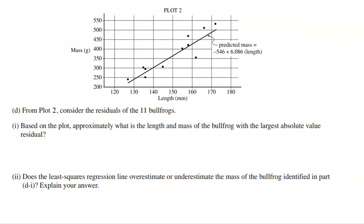One more part that has two parts to it. From plot two, consider the residuals of the 11 bullfrogs. Now we've got to remember what a residual is. A residual is the vertical up and down difference between an actual point and its predicted value from the equation. So it wants us to actually look at the residuals and to approximate the length and mass of the bullfrog with the largest absolute value residual. So what that means is whether it be a positive or a negative residual, which one has the largest, regardless of its positive or negative. So here we're going to look at the vertical distances. All of these are positive are the ones that are above the line. Negative are the ones that are below it. So which residual, which vertical distance is the longest? Bingo right here. Hopefully you agree with me on that one.